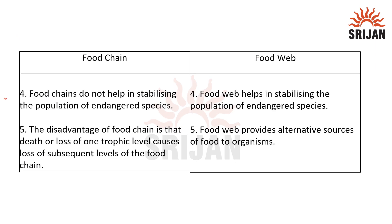Food chains do not help in stabilizing the population of endangered species, whereas food webs do help in stabilizing the population of endangered species. The reason is that food chain has a disadvantage: the loss of one trophic level can cause the loss of subsequent levels of the food chain.